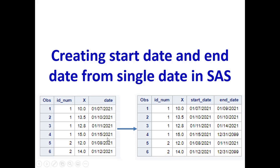We want the same logic applied to the next two observations. Now focus on the last observation — observation number four — which is the last record for id_num = 1. We don't have any more records for this id_num, so the start date stays as 01/15/2021, but since there are no further dates for this id_num, we set the end date to 12/31/2099. This logic applies for any other id_num as well.